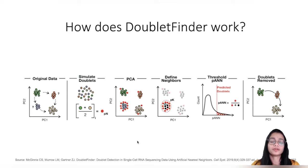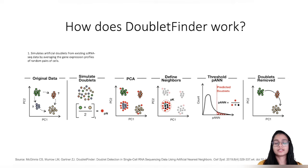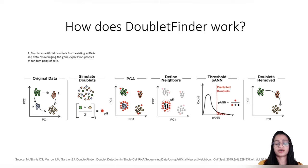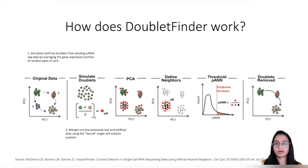DoubletFinder's workflow can be broken down into five steps. First, it simulates artificial doublets from existing data by averaging the gene expression profiles of random pairs of cells, introducing a proportion of artificial doublets — that proportion is the pN parameter. The authors found that DoubletFinder performance is not dependent on pN, so the default is set to 0.25. In the next step, the artificial doublets are merged with the real dataset and standard preprocessing steps are followed.